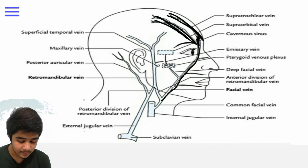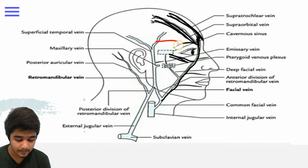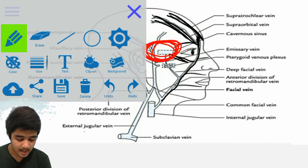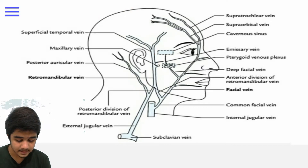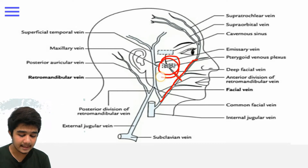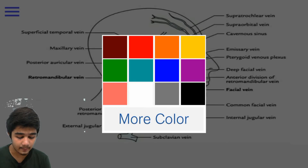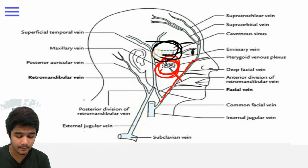That facial vein directly drains into the cavernous sinus via the superior ophthalmic vein — shown here in red color, that's the cavernous sinus. Another pathway to reach the cavernous sinus is that the facial vein gives off a deep facial vein, and that deep facial vein drains into the cavernous sinus through the pterygoid venous plexus.